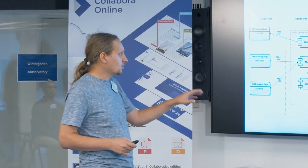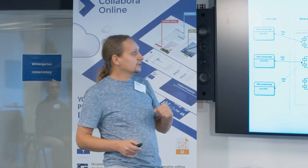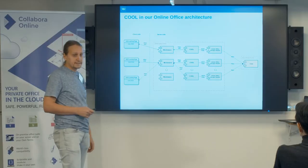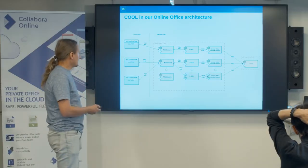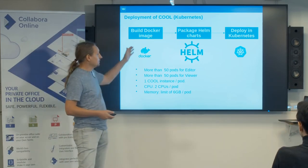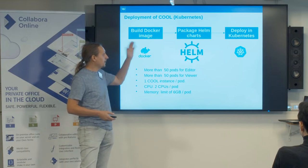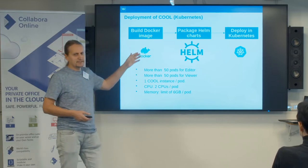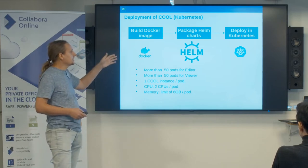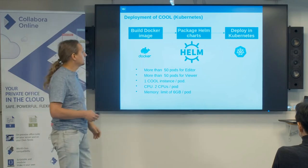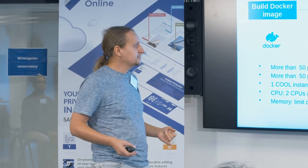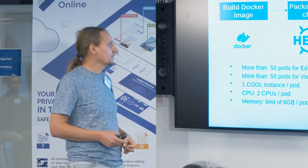We have some other small components but they are not so important. What I want to mention is that all three components are deployed and managed through Kubernetes. For deployment, we build a Docker image and package Helm charts — these are settings used by Kubernetes to configure the system on which the Docker image is deployed, like CPU, memory resources, and so on.